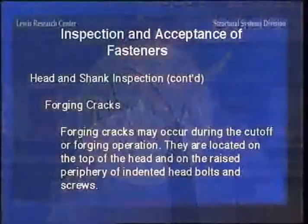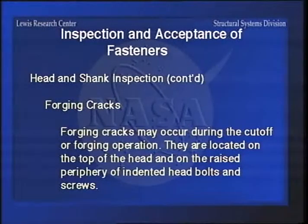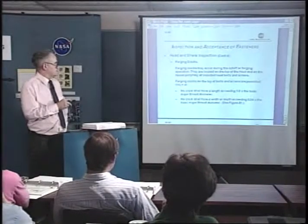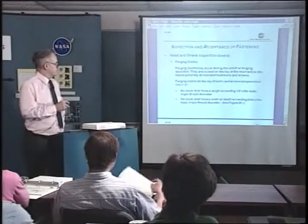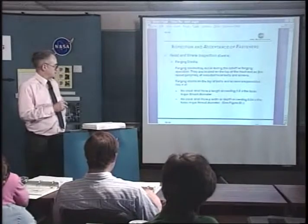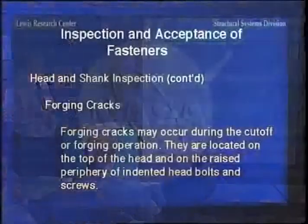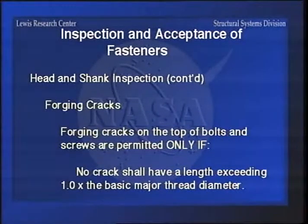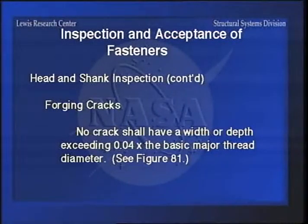Forging cracks - remember, the higher strength fasteners usually have forged heads because you don't want to have the discontinuity in grain flow at the fillet radius. So you can get forging cracks during the cutoff or forging operation, or even cold forging if the material is a little bit too hard. These are located on the top of the head or on the raised periphery around the indented head bolts and screws. You can accept some of them if they are very slight - more like a streak rather than a crack, with very shallow depth. But it depends on the criticality of the installation.